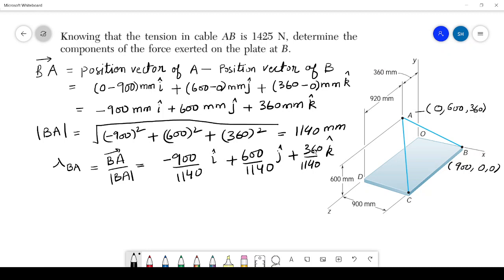So this is the unit vector. Now we can represent the force, that is tension force T_BA, as magnitude of the force into the unit vector in that direction.